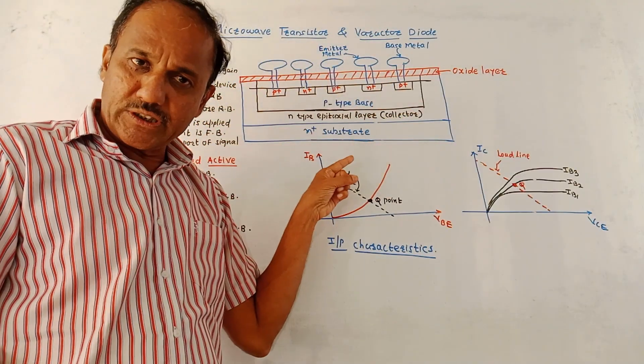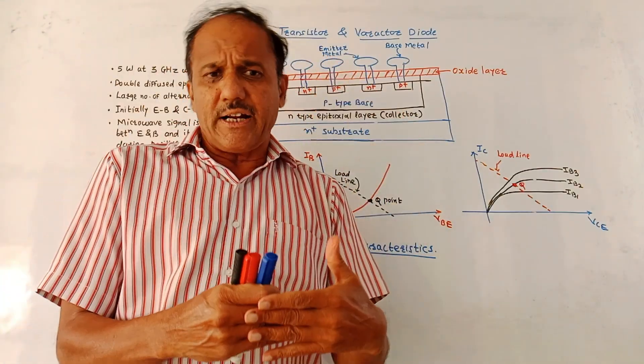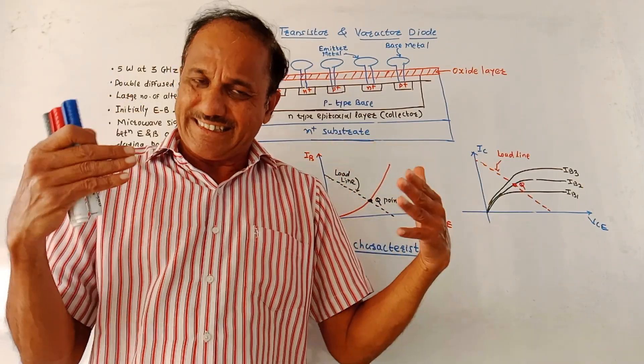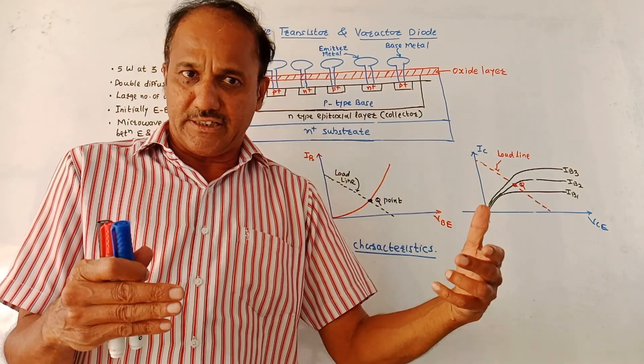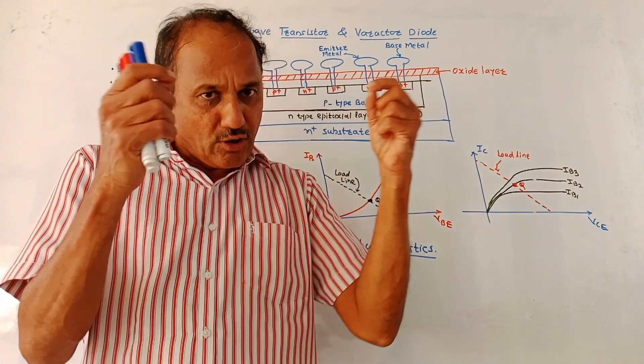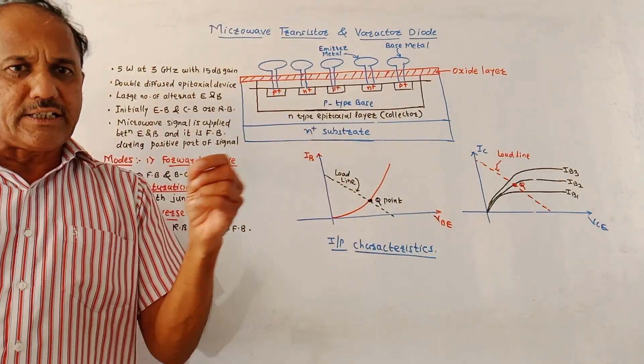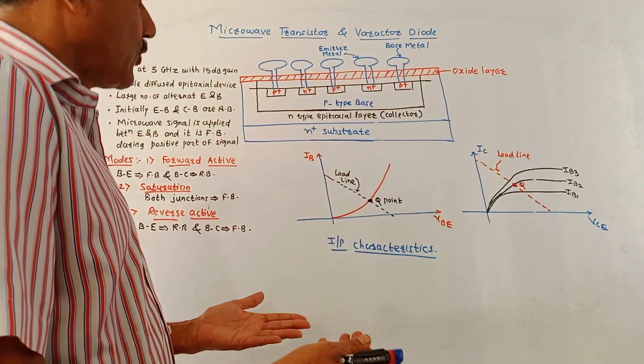First let us talk about the Microwave Transistor. This diagram shows constructional details of a Microwave Transistor. An important advantage of Microwave Transistor over Microwave Tubes is that in case of Microwave Tubes there is an effect of lead inductance because the leads are having longer length, whereas in case of Microwave Transistors the leads are short so this effect is minimized.